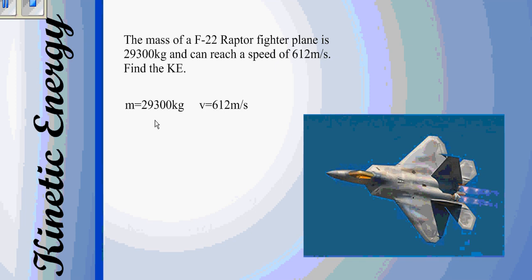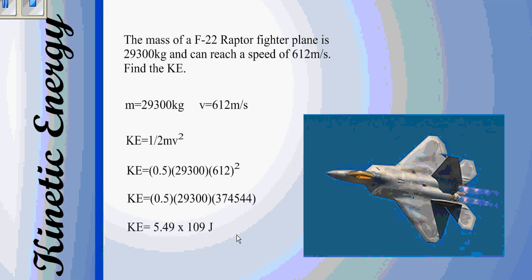And then we write down the formula that gives me what I know, what I want to know, and this one we already know, we can just plug and chug. So we plug everything in, and then solve for 612 squared, we get this. And then you should end up with 5.49 times 10 to the 9th joules as your answer.